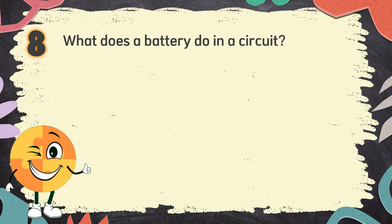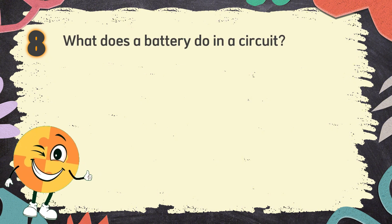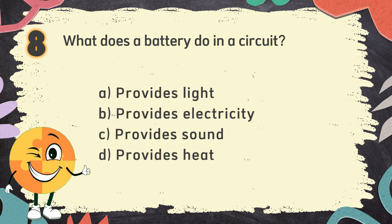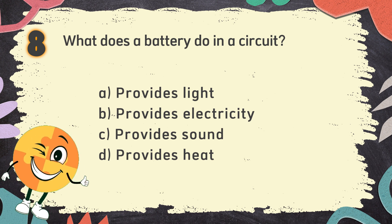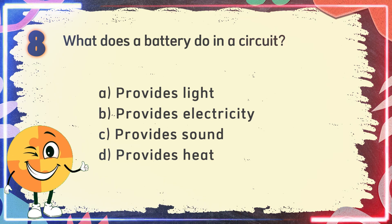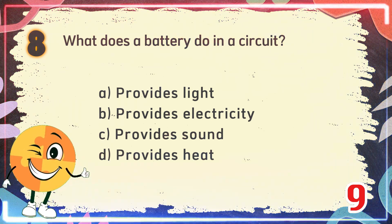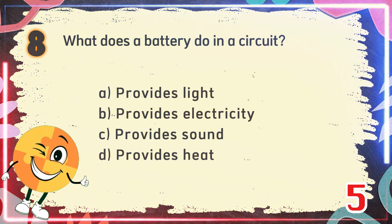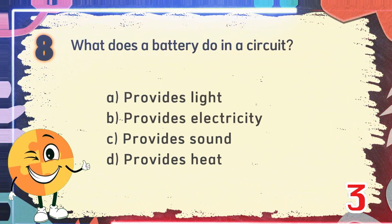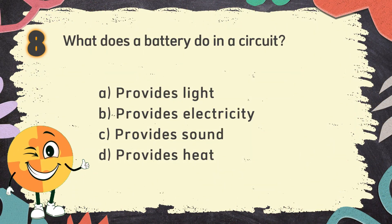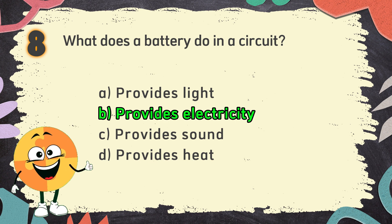Number 8. What does a battery do in a circuit? The choices are: A. Provides light, B. Provides electricity, C. Provides sound, D. Provides heat. The correct answer is B. Provides electricity.